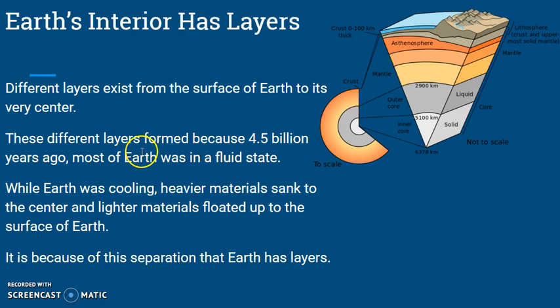The different layers formed because 4.5 billion years ago when earth was formed, most of it was in a fluid state. It was so hot that it was melted — it was all liquid, not solid like the surface is today. While earth was cooling, heavier materials sank to the center and lighter materials floated up to the surface. It is because of this separation that earth has layers.